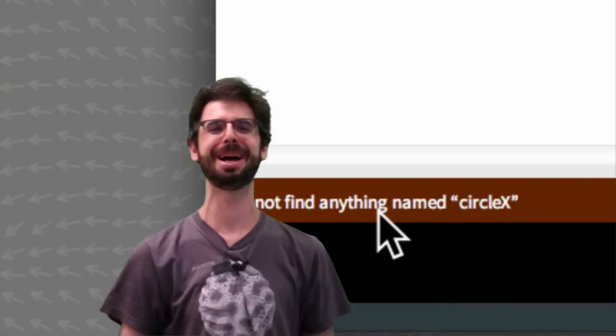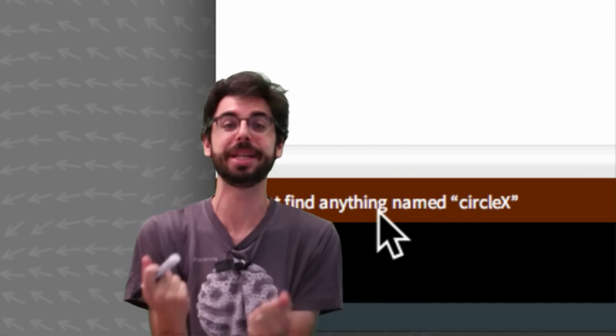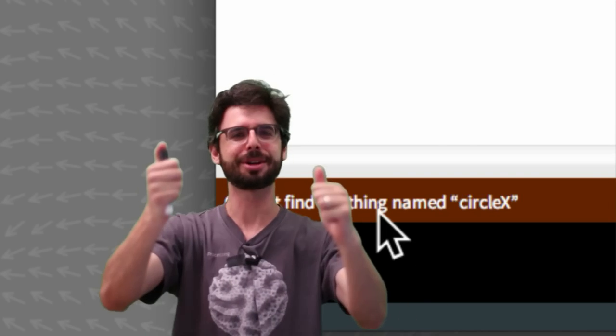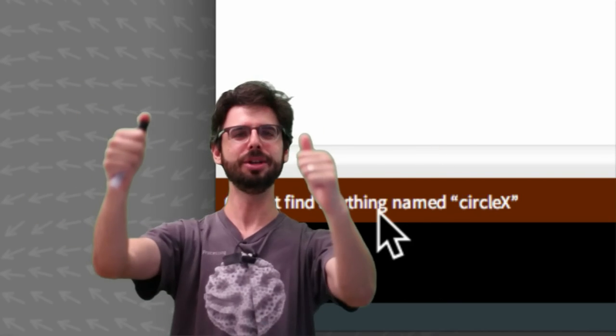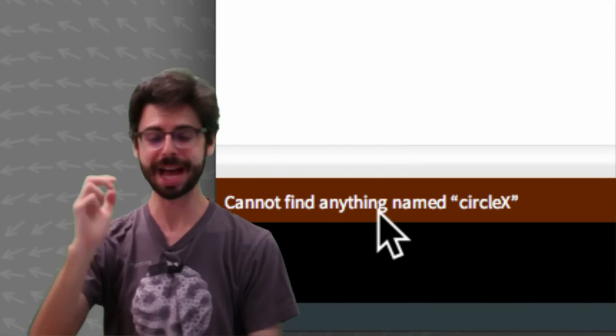The saddest error message ever to happen in our life. Processing, it can't, it doesn't know, it needs our help. It needs us to say, this is what circle x is. This is how I'm going to use it. Go and be happy and draw your circles at circle x. So that's really where we're going to go.